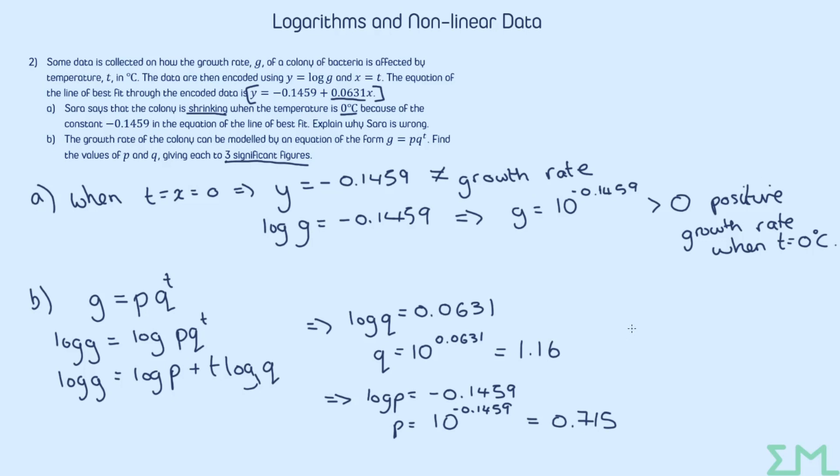So again, I always like to write out the model just so I can go, okay, this is the purpose of what I've done. I've been able to work out the parameters of the original model that fits this data. So we have G equals 0.715 multiplied by 1.16 to the power of T. So always look out as well for any questions where you're asked to interpret what these values actually mean. Here, the number in front, this will always be the case of an exponential model. This is a value that you get for the dependent variable when the independent variable is 0. So this would be the rate when the temperature is 0 degrees.